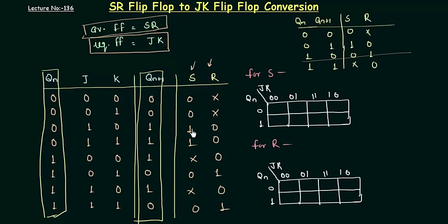Let's do it. S is 0, 0, 1, 1. So 0, 0, 1, 1. Don't care 0, don't care 0. Similarly, R is don't care, don't care 0, 0, 0, 1, 0, 1. So I have filled the map.